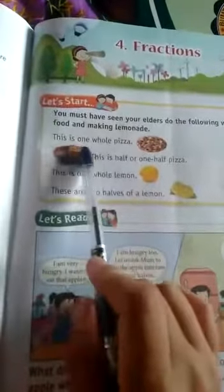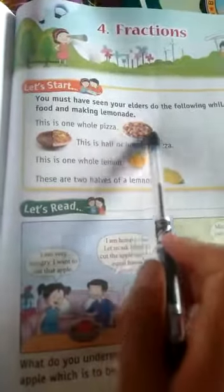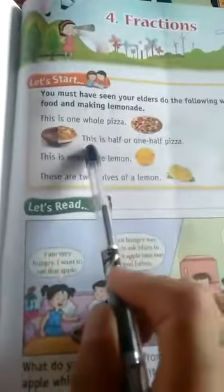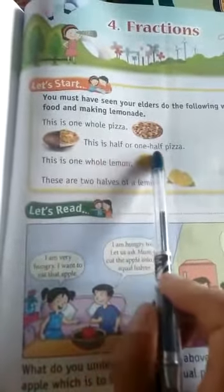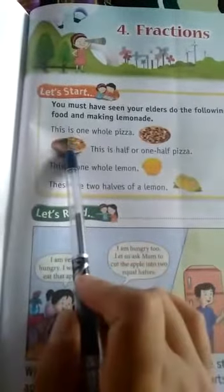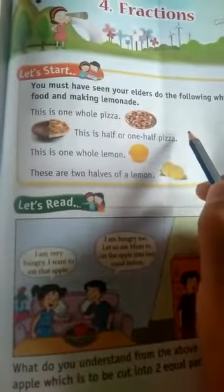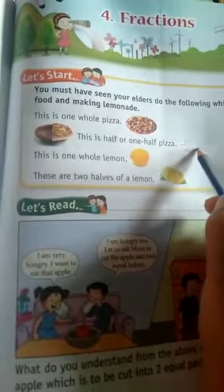Let's read here. This is one whole pizza. This is half or one-half pizza. Here it's divided in the middle, so this is half. It's divided in the middle. This is how you will write one by two.